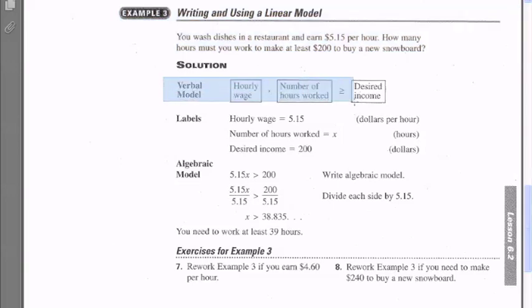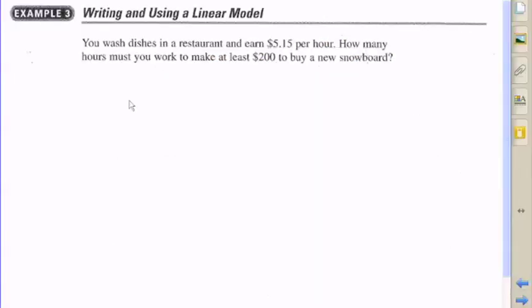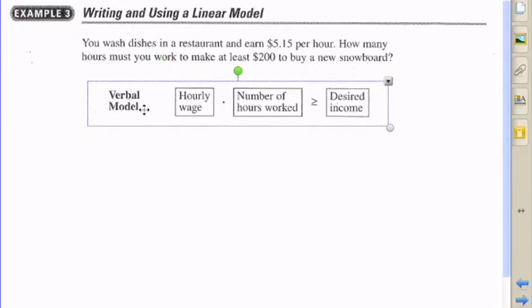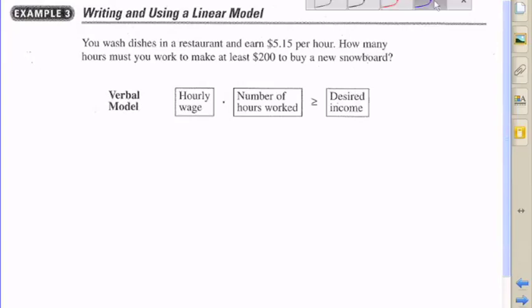Here's a verbal model. After you wash dishes in a restaurant and earn $5.15 an hour, how many hours must you work to make at least $200 to buy a new snowboard?